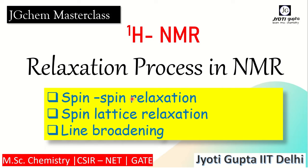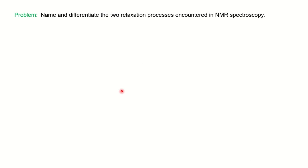Now we will discuss relaxation. This question came in a previous year MSc exam: name and differentiate the two relaxation processes encountered in NMR spectroscopy. First, let's define relaxation. The non-radiative transitions of nuclei from higher energy state to lower energy state is called relaxation.